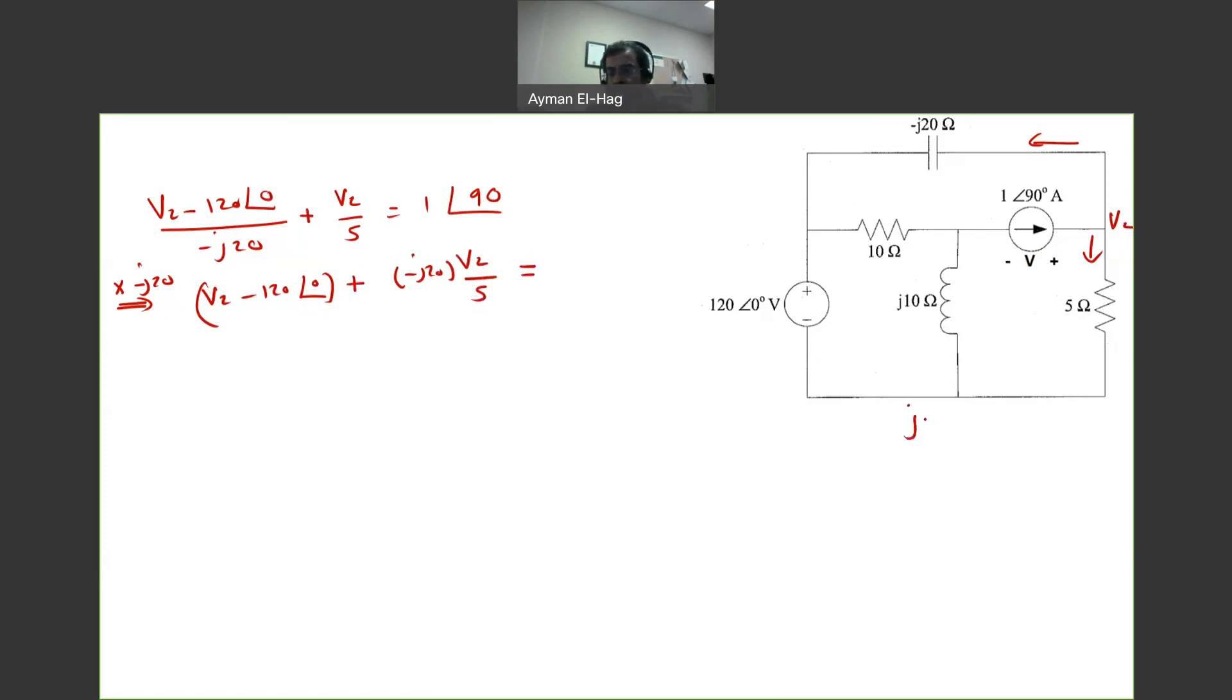Now, as we said before, minus J20 is equal to 20 angle of minus 90. So we will multiply 20 angle of minus 90 times 1 angle of 90. So what we will get here, we will get 20 angle of 90 minus 90 or 0.